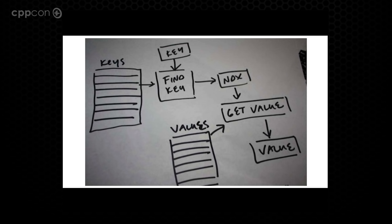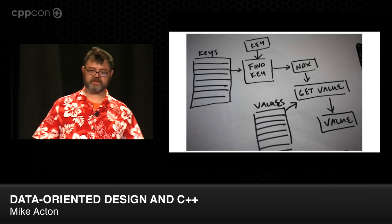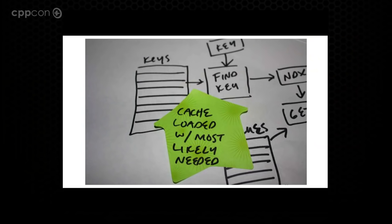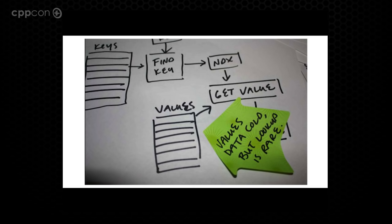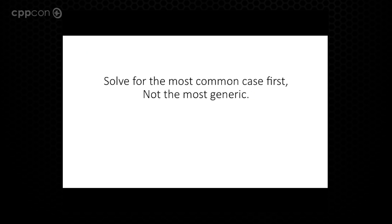The reality is more like this: we have some keys, I want to find a key, from that I get an index, and from that I can get my values from a table. That's the actual process we actually want to happen the vast majority of the time. In this case the keys are stored together — cache will be loaded with the most likely data we'll actually need: the next key. While the one hit for the value will probably be a cold cache miss, it's only that one, and it's a statistically rare case. What we want to do is solve for the most common case first — the most common actual, real, live case — not the most generic.